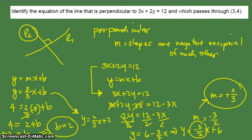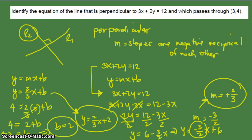So the equation we need is y equals 2/3 x plus 2. This is the line that is perpendicular to the given line 3x plus 2y equals 12. The key in solving this problem is the idea of perpendicular lines — when two lines are perpendicular, the slopes are negative reciprocals of each other. If the first slope is negative 3 over 2, the perpendicular slope is positive 2 over 3. Set up the slope-intercept form, supply the slope, and find b using the given point.